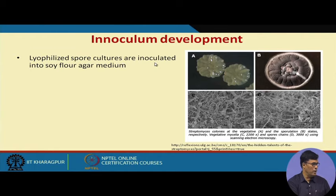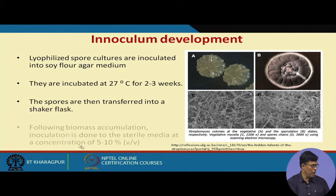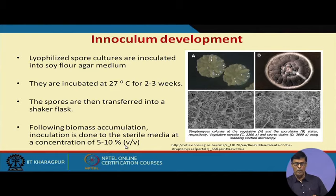Lyophilized stock cultures are inoculated into soybean flour agar media and incubated at 27°C for 2 to 3 weeks. Spores are then transferred to shake flasks for biomass accumulation, and the inoculum is then added to the sterile production media at a concentration of 5 to 10 percent. For a 100 cubic meter production fermenter, this means about 5 to 10 cubic meters of inoculum, with 90 cubic meters of media making up the total volume.